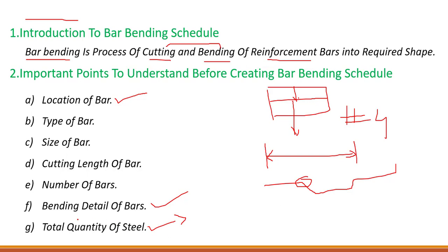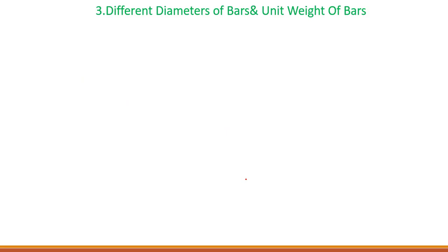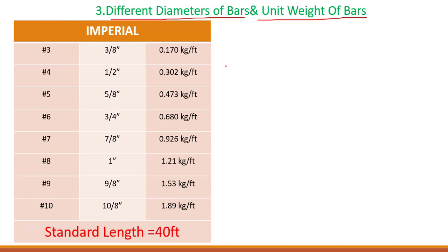At last, we need to find out the total quantity of steel. This is the main purpose — how much steel we require, whether it could be a slab, beam, columns, or footing. So these points are very important to understand before creating the BBS. Next, let's look at different diameters of bars and unit weight of bars.